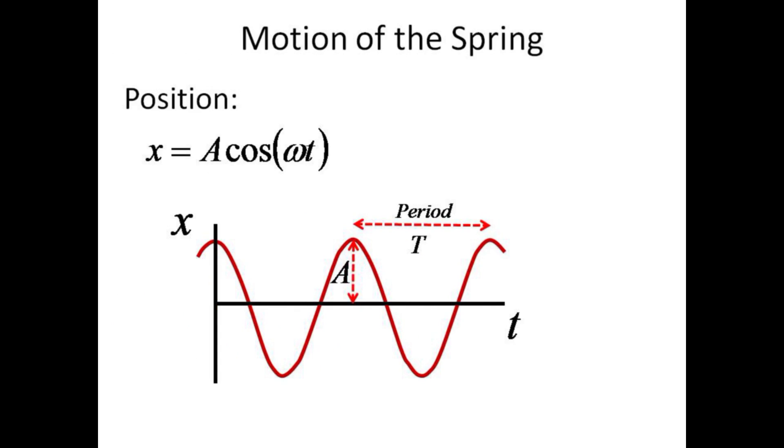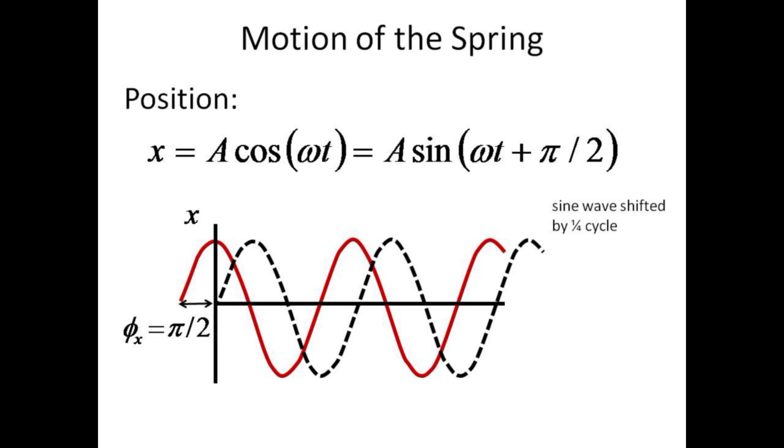The position x of the spring as a function of time is given by a cosine omega t, where a is the amplitude of the oscillation, that is, the maximum displacement from the equilibrium. The cosine function is just a sine function, but given a head start of a quarter cycle, or pi over two radians.